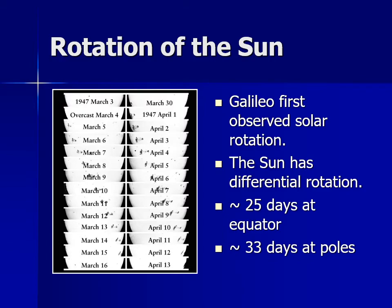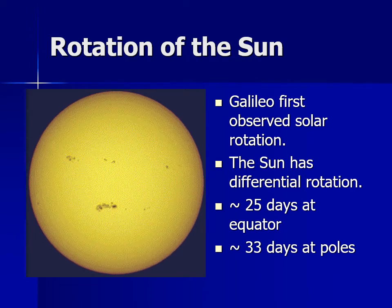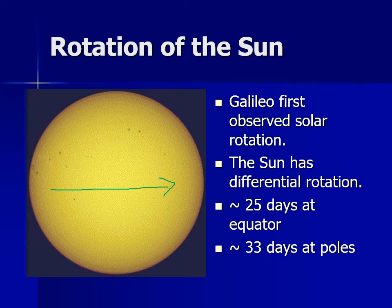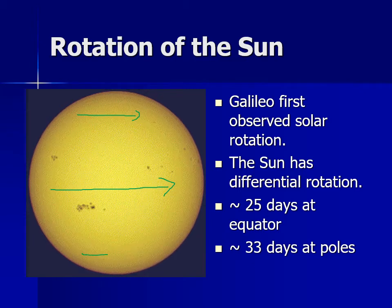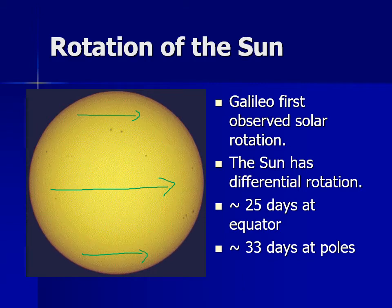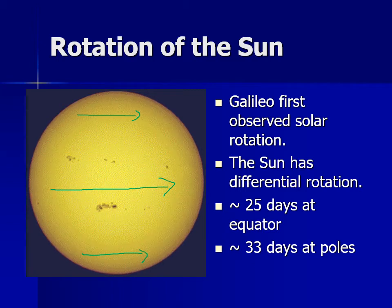The sun has what we call differential rotation, which means that at the equator, it rotates but takes about 25 days. At the polar regions, however, it takes about 30-something days to go around. So the equator goes around faster. This can be seen by watching sunspots near the equator go around, and the ones near the equator take less time to cross the face of the disk than the ones at high latitudes.